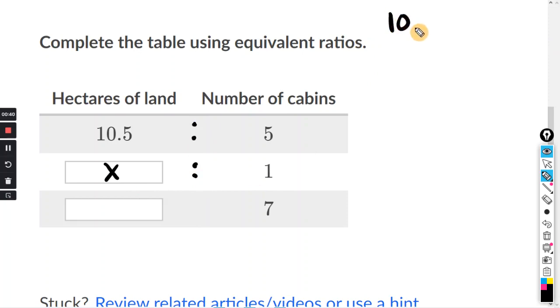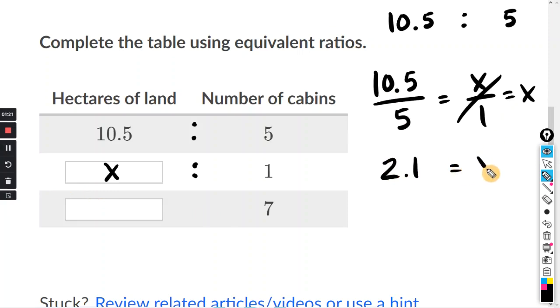10.5 to 5 is a ratio, but we can write a ratio as a fraction. So I'm going to write it as 10.5 over 5 and set that equal to X over 1. Now we could cross multiply, but X over 1 is just X, so it's not necessary in this case. I'll just do this on the calculator. 10.5 over 5 is just 2.1, and that equals X. So in this box here, I'm going to fill in 2.1.